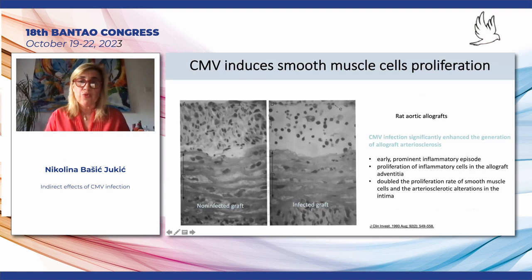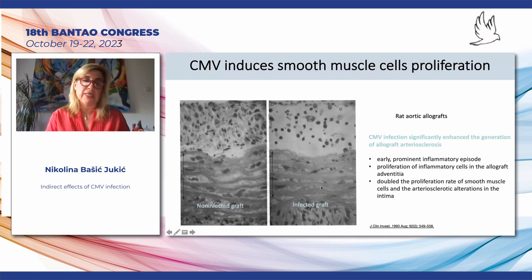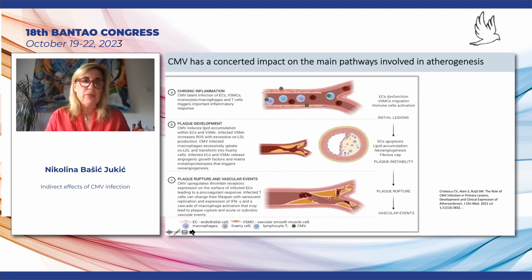This may also be the consequence of the so-called two-hit damage of the intima, finally leading to changes of the vessel wall. One study — a 20-year-old but very interesting study — tried to find out what morphological changes occur in rat aortic allografts infected by CMV. They found that CMV infection caused prominent inflammatory episodes with proliferation of inflammatory cells, proliferation of smooth muscle cells, and atherosclerotic changes of the intima in the infected aortic graft.